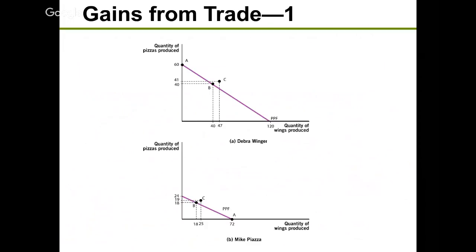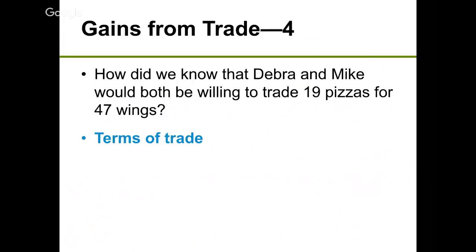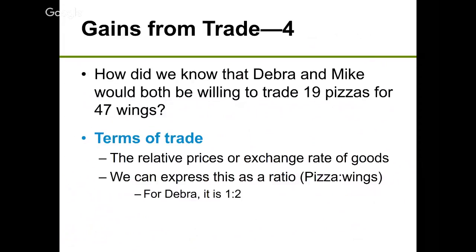Once there is more total output and it's divided fairly, both parties can consume at a point outside of their individual PPF. Remember, a point outside the PPF is normally called impossible or unattainable. But if you trade and specialize, you can consume at that previously impossible point — that's called the gains from trade. Trade makes what used to be impossible now possible.